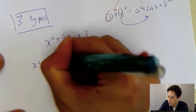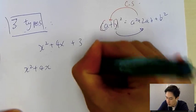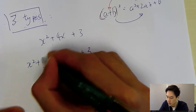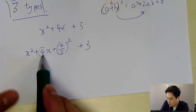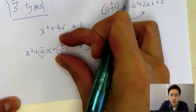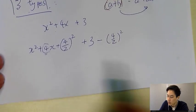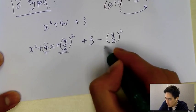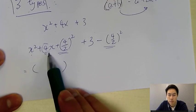For x² + 4x + 3, take the first two terms as a² + 2ab, leave the b² blank, and keep the +3. Always remember to add (b/2)² — here that's (4/2)², which is 4. But you can't just add something without keeping the equation balanced, so if you add it, you must also subtract it. So you get: x² + 4x + (4/2)² + 3 − (4/2)². These three terms form a perfect square: a² + 2ab + b².